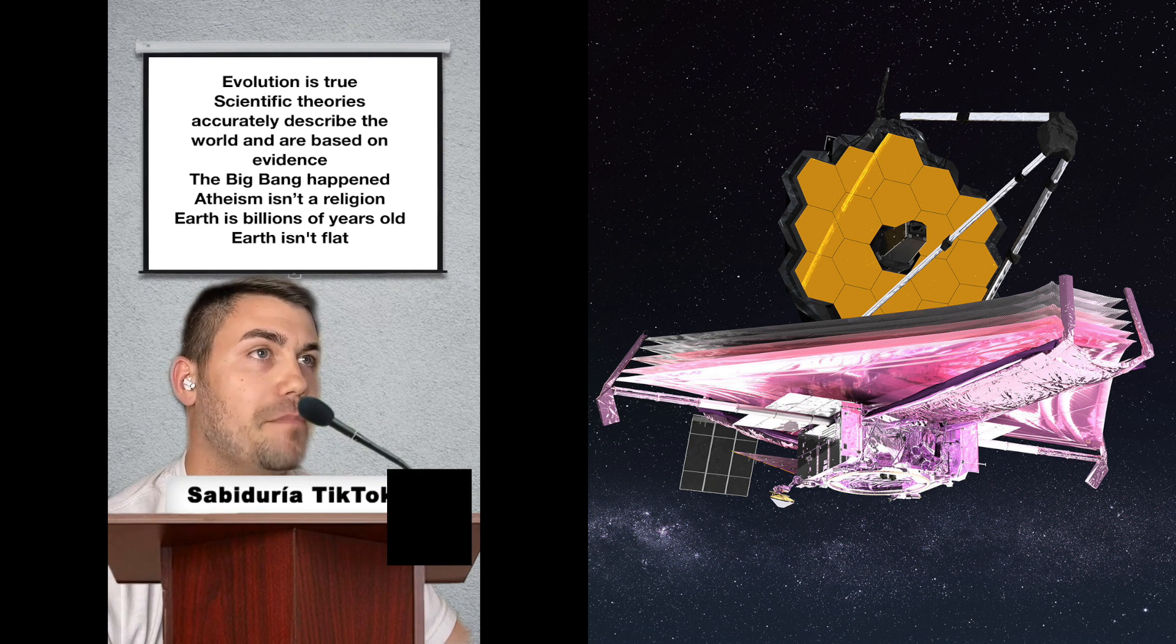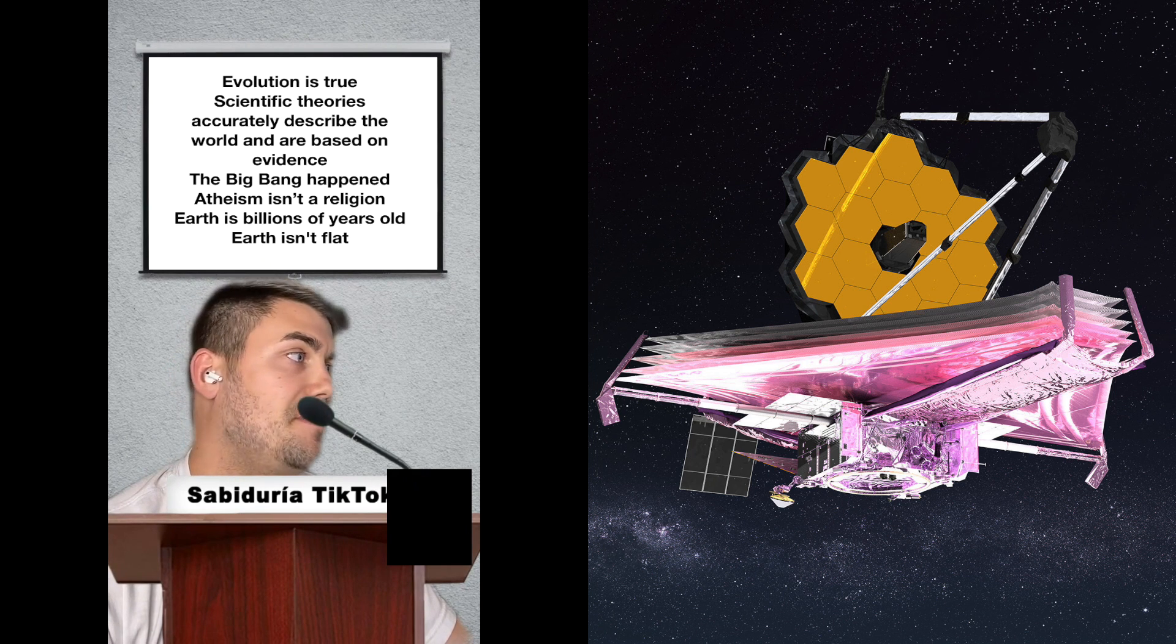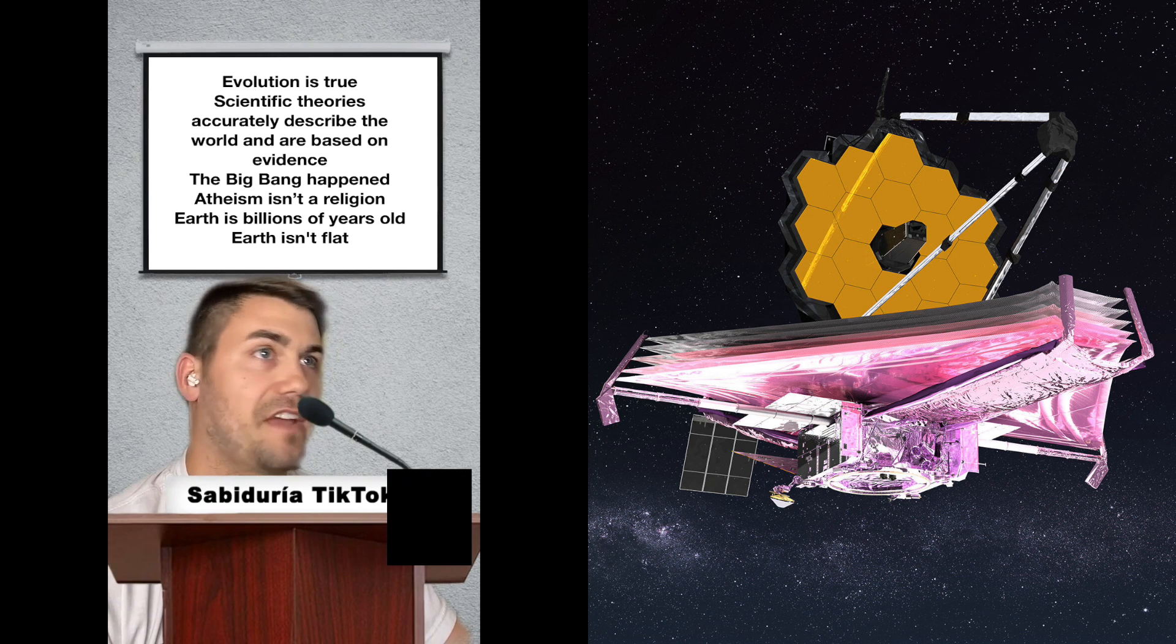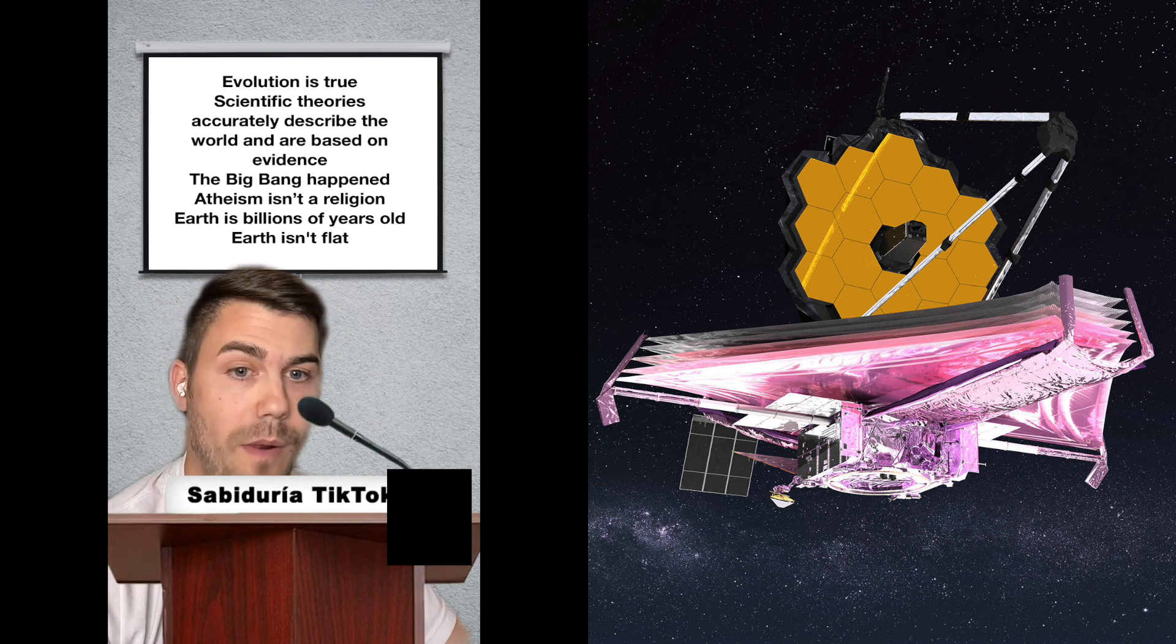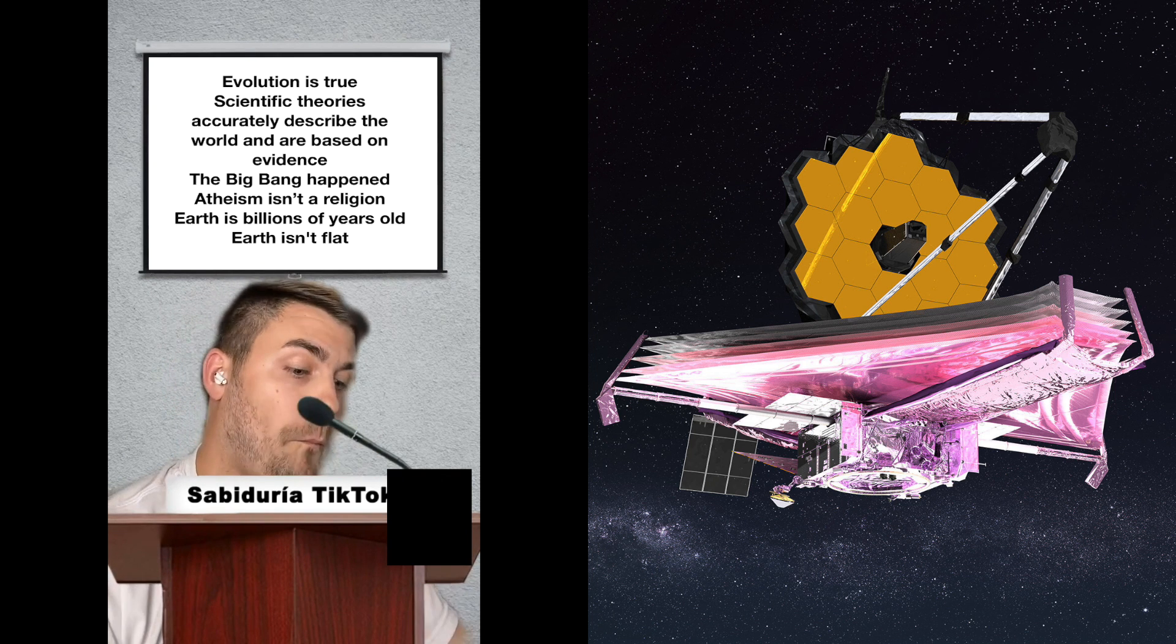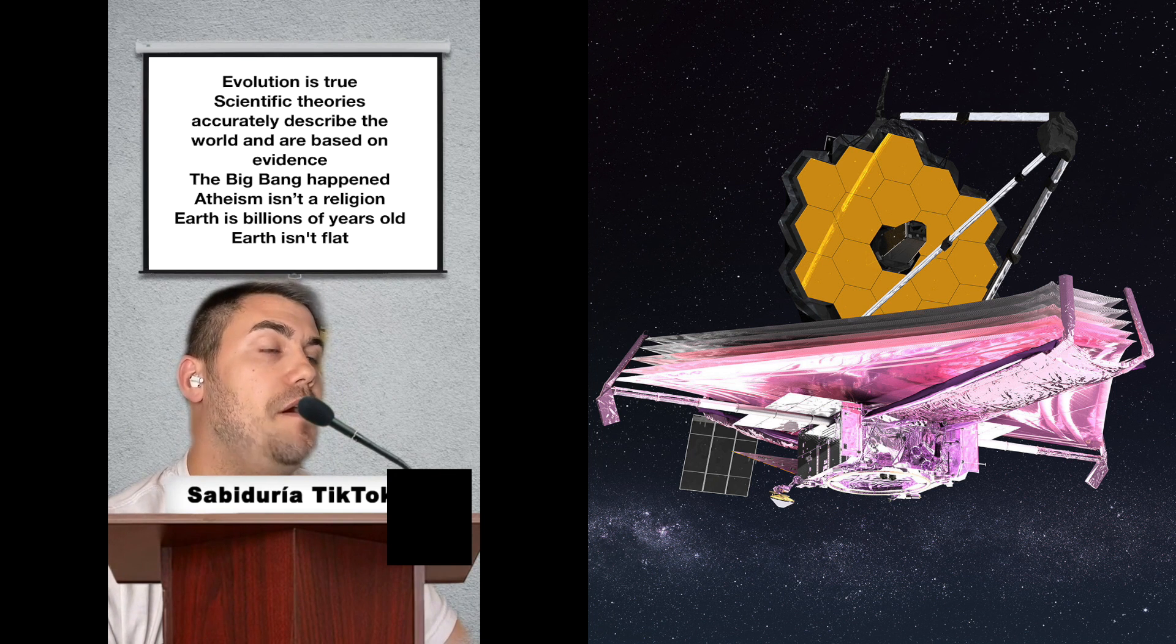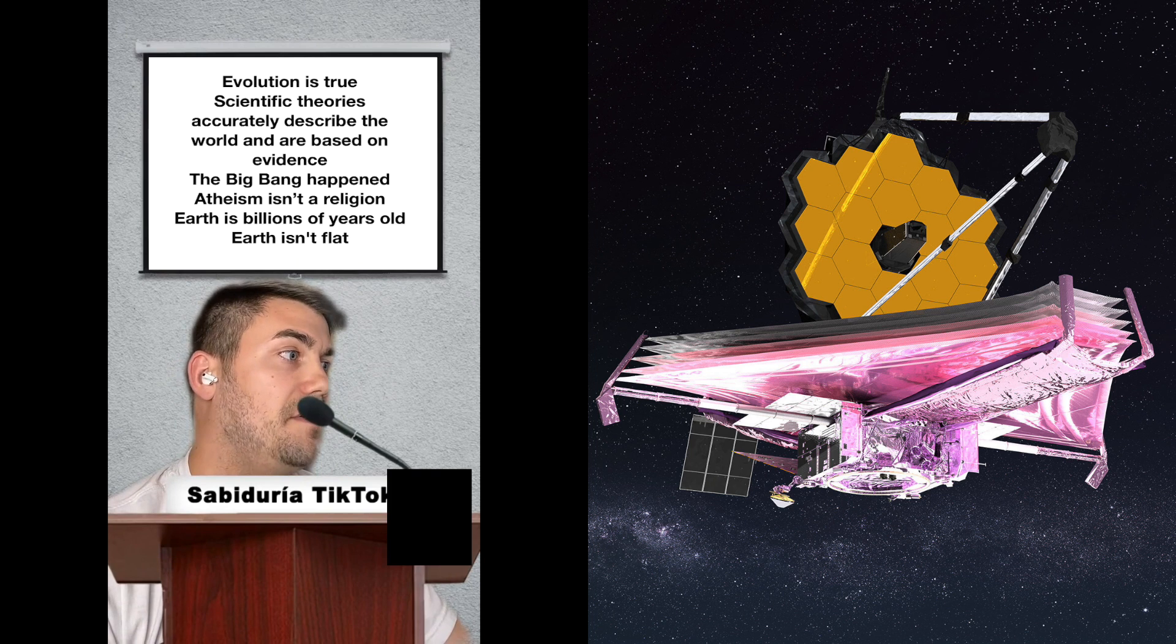The Big Bang is supposed to have happened like a hundred something billion years ago, and they're showing galaxies that are older than that. 14 billion years ago. Right. No, there are no pictures of galaxies that are older than the age of the universe. Zero. And they're supposed to be further away. If it's Big Bang, everything's going away from us.